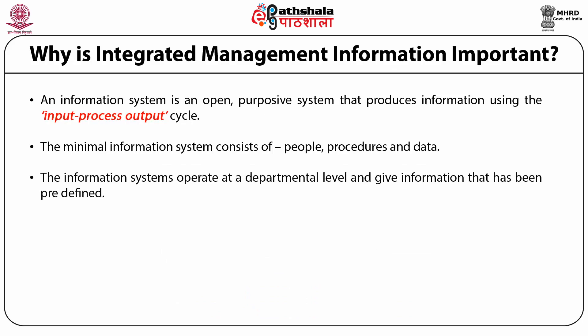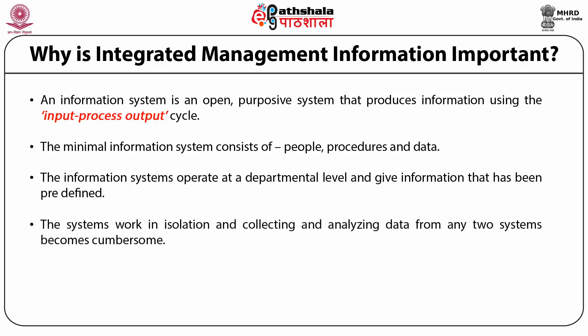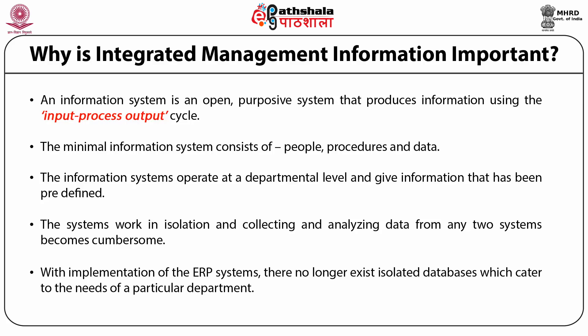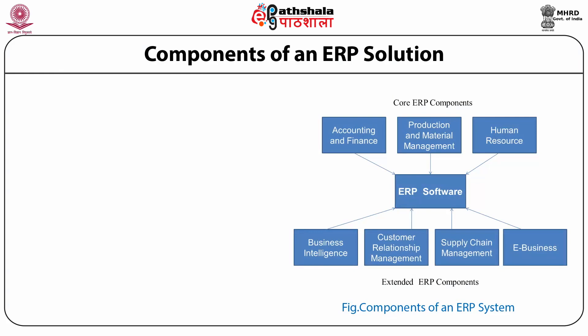The information system operates at a departmental level and gives information that has been predetermined. Each department has its own database and information system, and these systems lack an integrated approach. The systems work in isolation, and collecting and analyzing data from any two systems becomes cumbersome. With implementation of enterprise resource planning systems, there no longer exist isolated databases catering to a particular department. All data comes from an integrated database, which reduces data redundancy and provides updated information about the entire organization to all employees.